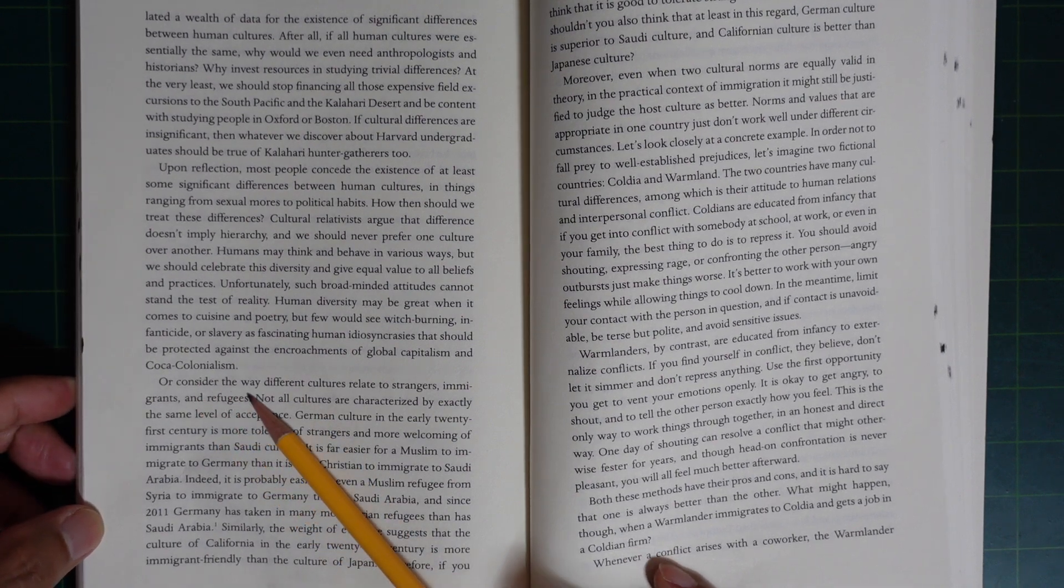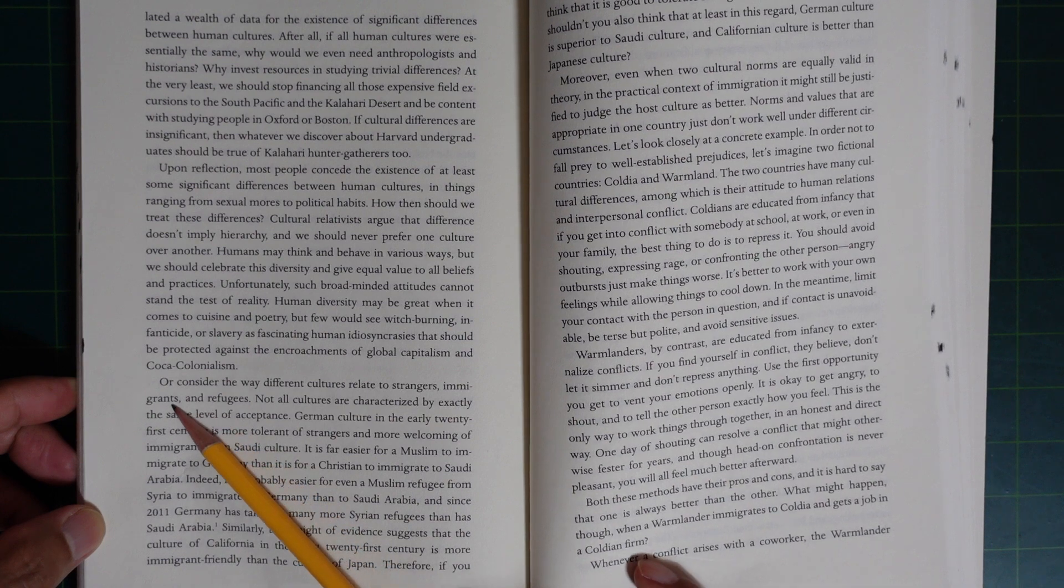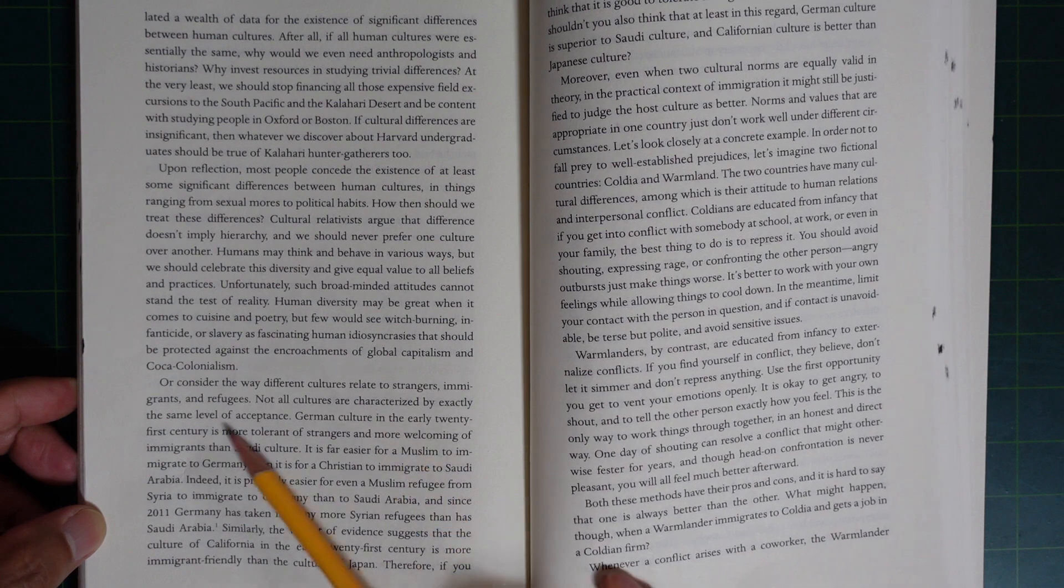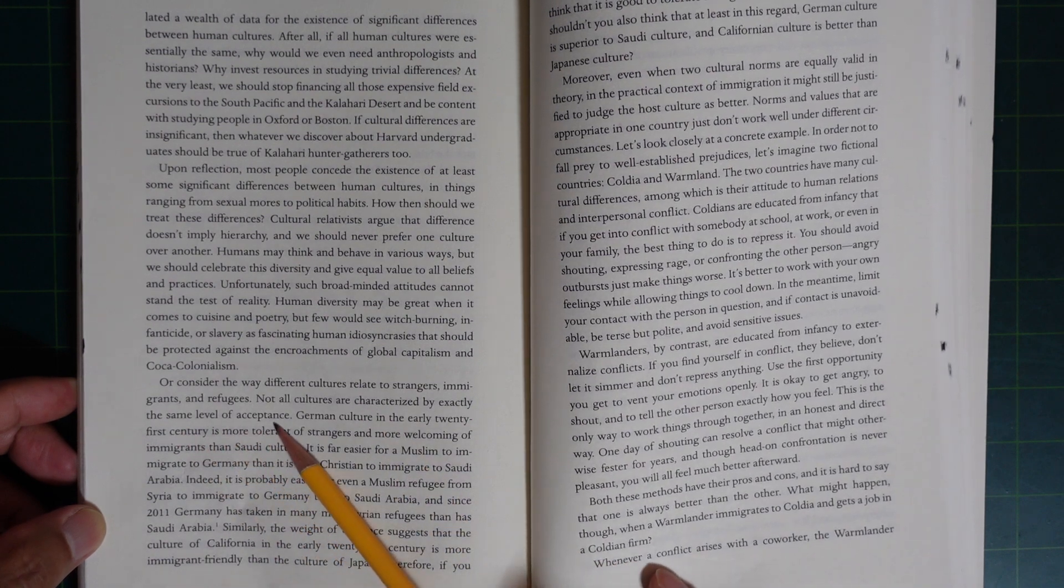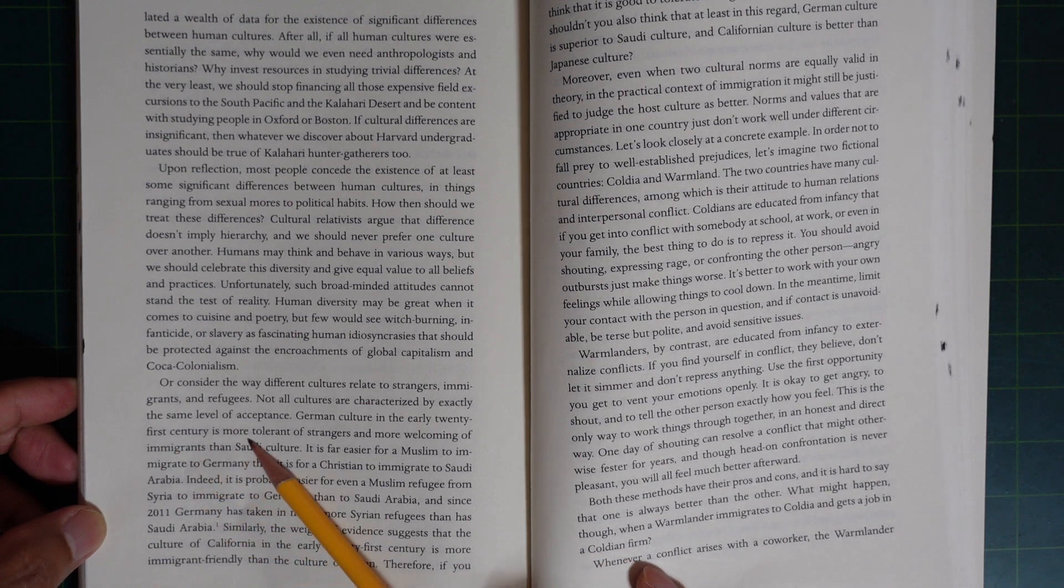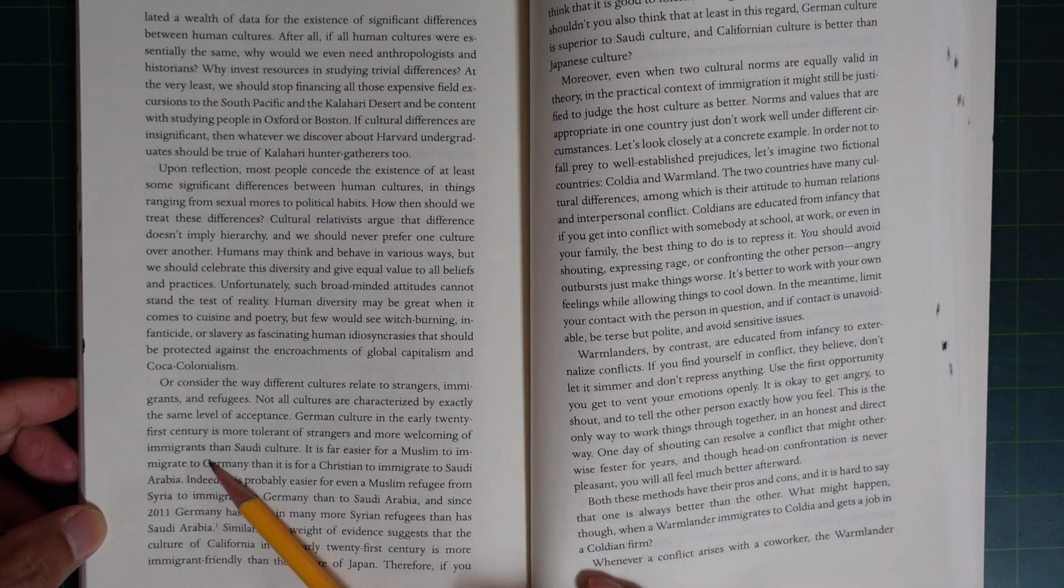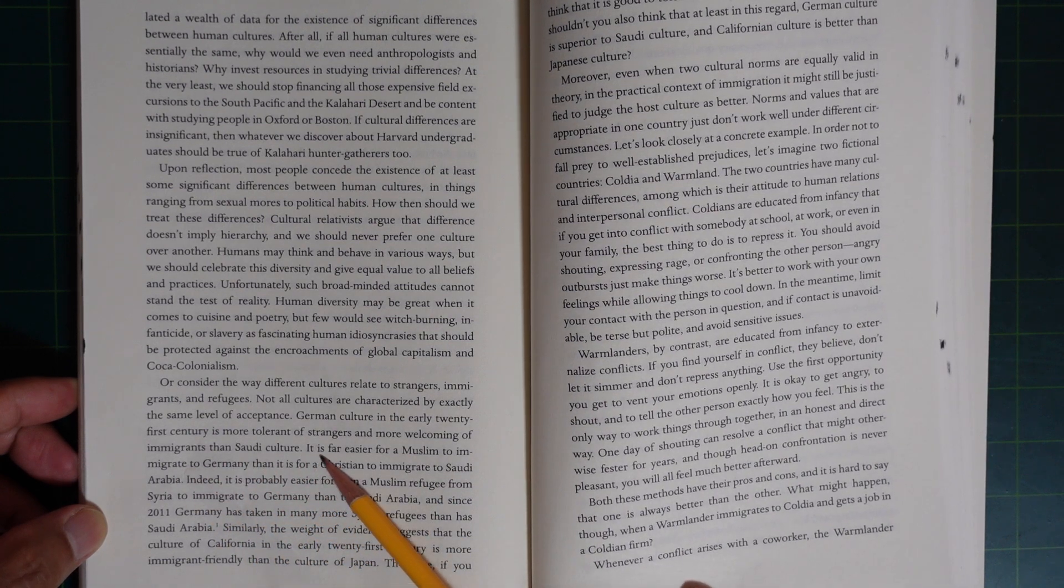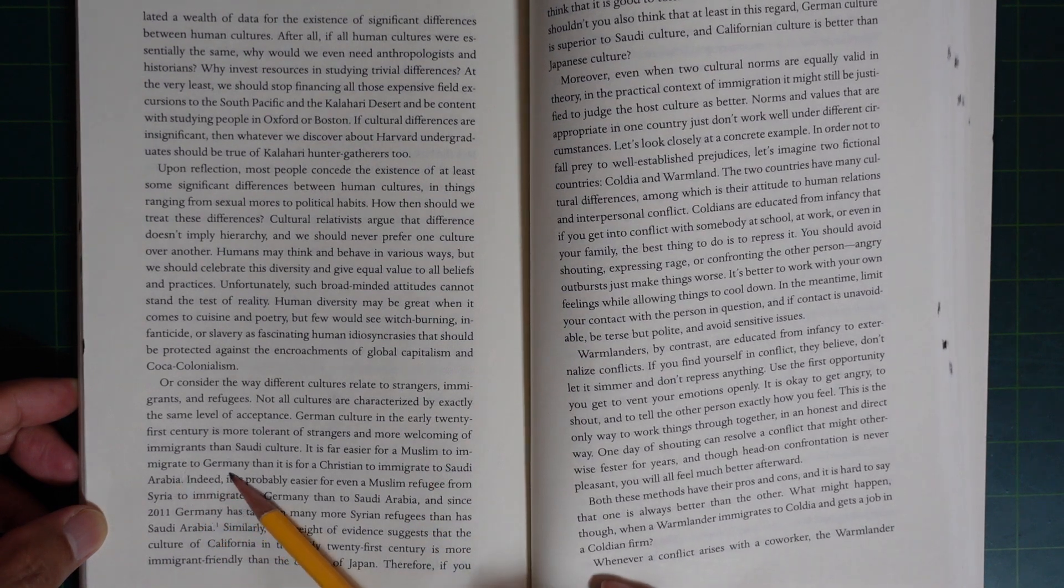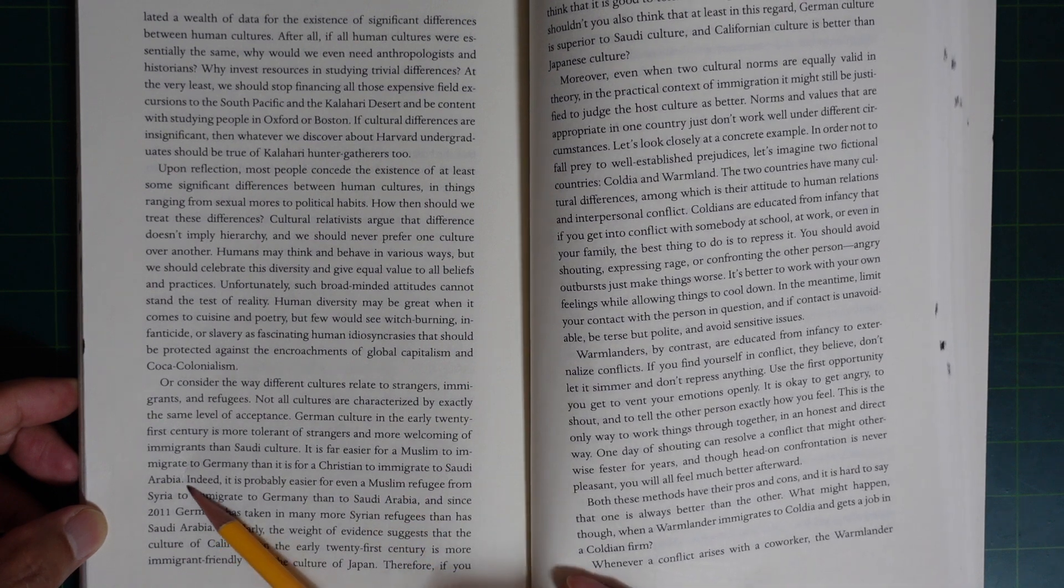Or consider how different cultures relate to strangers, immigrants, and refugees. Not all cultures are characterized by exactly the same level of acceptance. German culture in the early 21st century is more tolerant of strangers and more welcoming of immigrants than Saudi culture. It's far easier for Muslims to immigrate to Germany than for Christians to immigrate to Saudi Arabia.